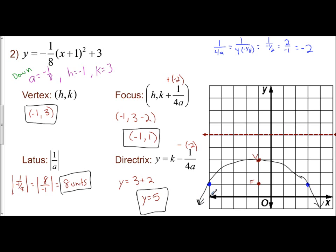One thing I want to point out is our 1 over 4a value — this was negative 2. I've defined this as the distance from your vertex to your focus and vertex to the directrix. So if you find this value, you don't need to go to the formula. If you know that your distance is 1 over 4a and it's negative, just go down 2, mark the point, then go up 2 and draw the line. If you actually learn what A, H, and K do and what the distance from vertex to focus means — rather than relying 100% on the formulas — you can get the answers just from the graph.